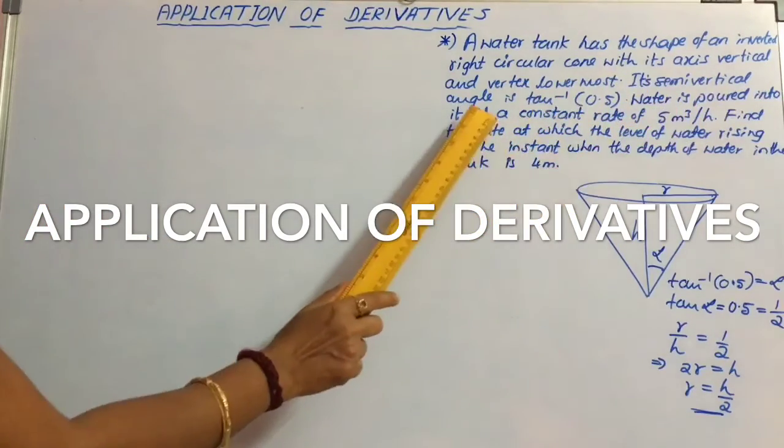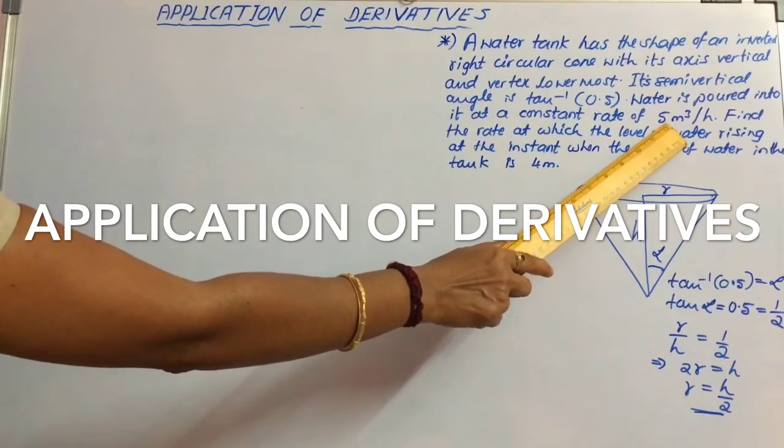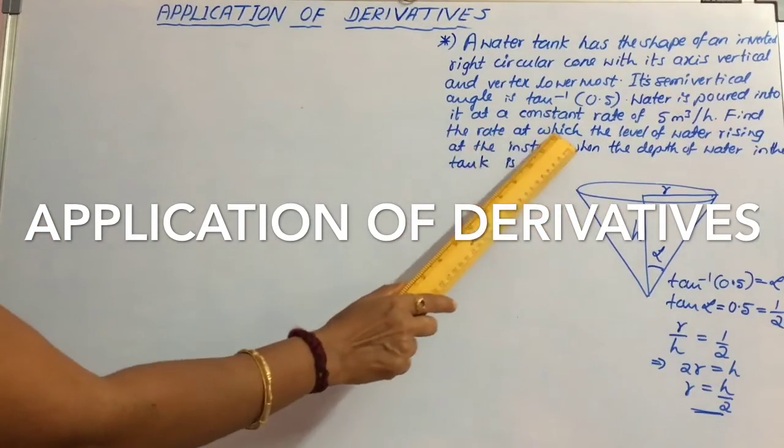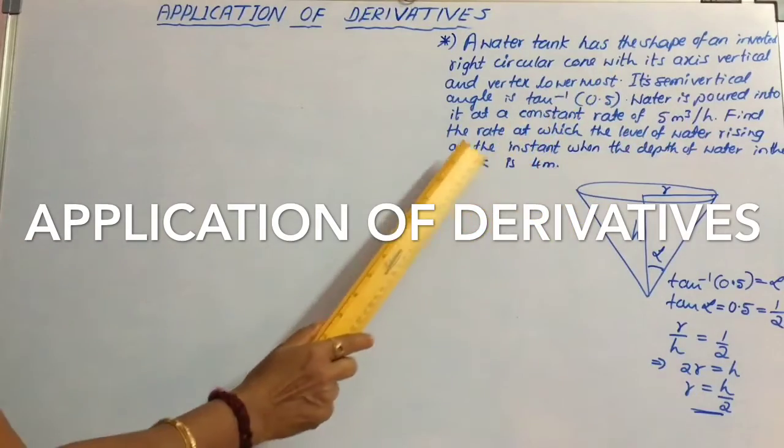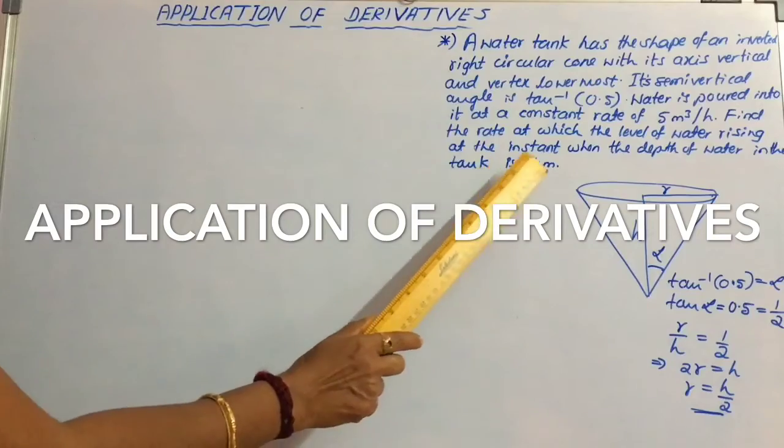Water is poured into it at a constant rate of 5 cubic meters per hour. Find the rate at which the level of water is rising at the instant when the depth of water in the tank is 4 meters.